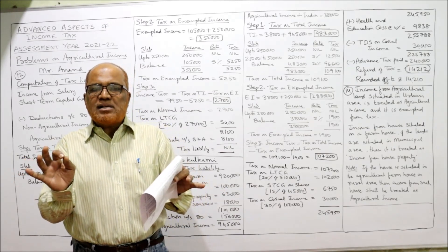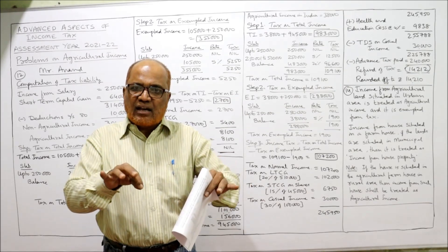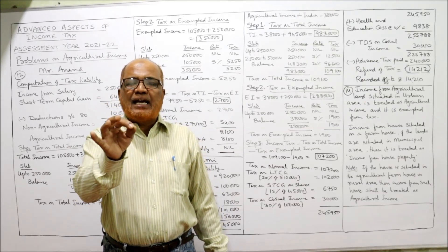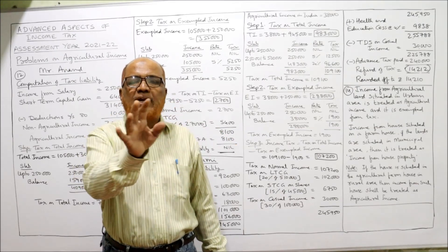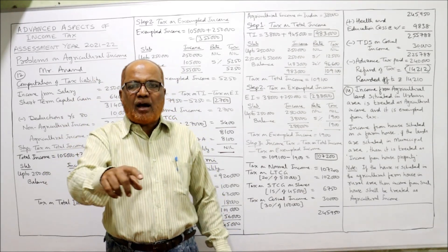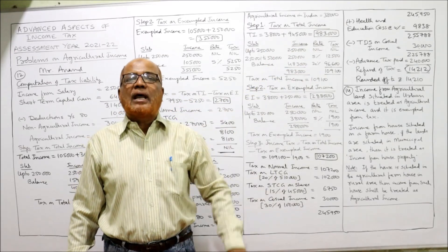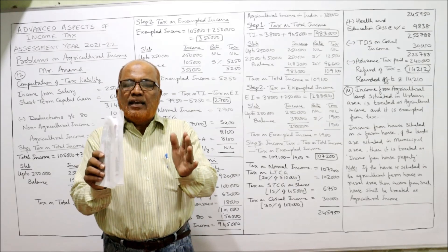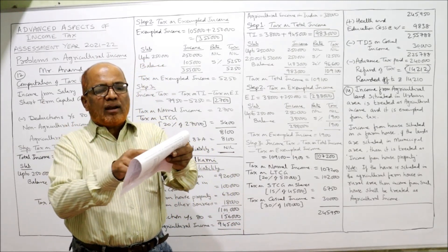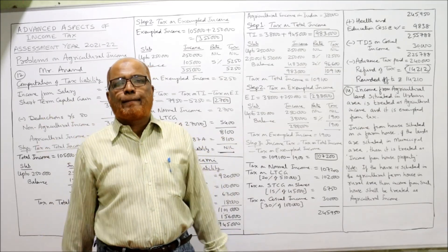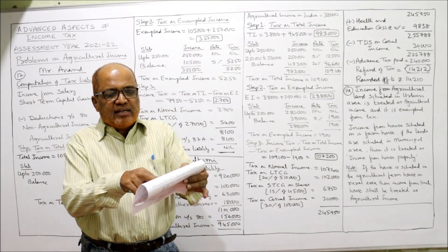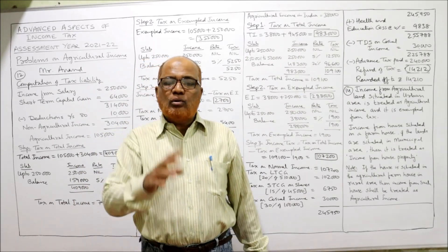The question asks: determine the nature of income from a taxation point of view — no calculations required, just identify whether income is agricultural or non-agricultural. One key point: agricultural income earned from agricultural land, whether situated in urban area or rural area, is always treated as agricultural income and is exempted from tax. So the annual rent of 2,80,000 received from agricultural land is entirely agricultural income, regardless of whether the land is in a rural or urban area.